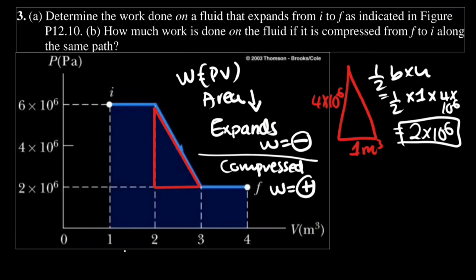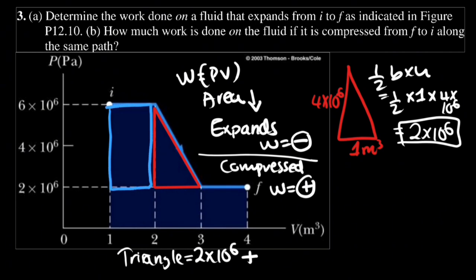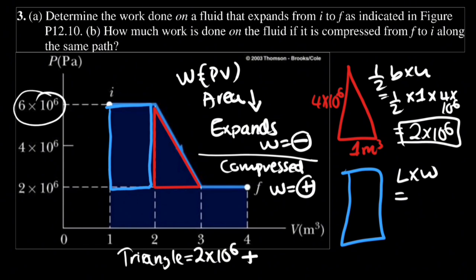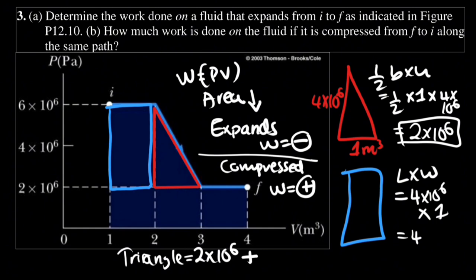We add the triangle area of 2 × 10⁶ to the other areas. For the rectangle, the area is length times width. The length is 6 minus 2 equals 4 × 10⁶, multiplied by the width of 2 minus 1 equals 1, giving an area of 4 × 10⁶.